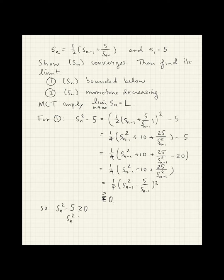So Sn squared is greater than or equal to 5. And I can take the square root of both sides. And since the square root function is a monotone function, it preserves inequalities. And this shows Sn is bounded below by the square root of 5.